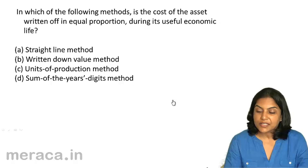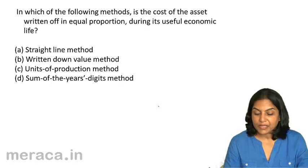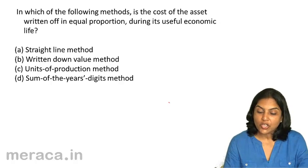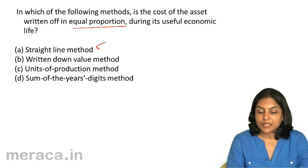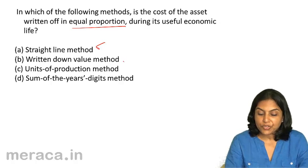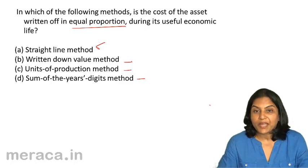In which of the following methods is the cost of the asset written off in equal proportion during its useful economic life? A. Straight line method, B. Written down value method, C. Units of production method, D. Sum of years digits method. Under straight line method it is written off in equal proportion. Written down value is reducing, units of production depends on units produced, and sum of years digits is also reducing. The correct answer is A.